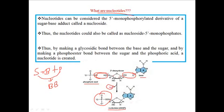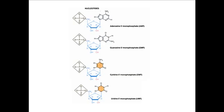Here are the nucleotides. The same nomenclature follows for nucleotide formation. When adenosine makes a nucleotide, we call it adenosine 5' monophosphate (AMP). Guanosine becomes guanosine 5' monophosphate (GMP). Cytidine becomes cytidine 5' monophosphate (CMP). Uridine becomes uridine 5' monophosphate (UMP). These are all monophosphates.